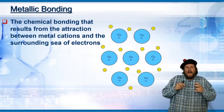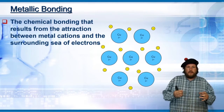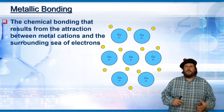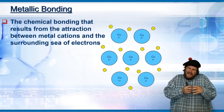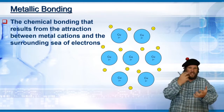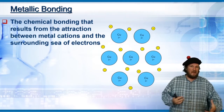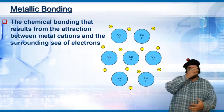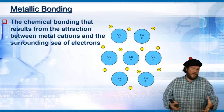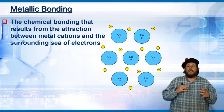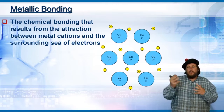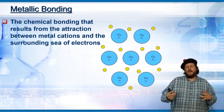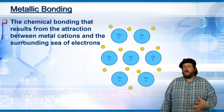There is a chemical bond that results from the attraction between metal cations and the surrounding sea of electrons. What happens is when the metals all get together, they give up and distribute their outer shell of electrons, and you end up with this ocean, this sea of electrons that surrounds all of the positively charged metal cations. Those electrons are all free to move around through the different orbital levels of those shared metal atoms.